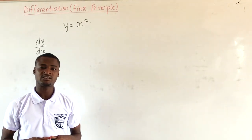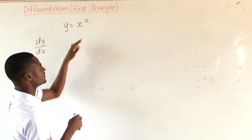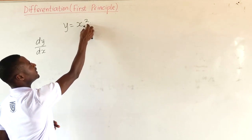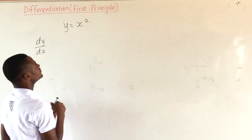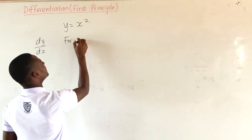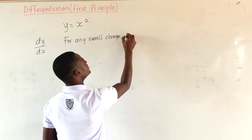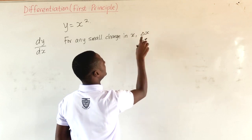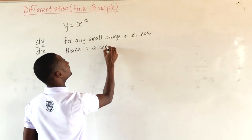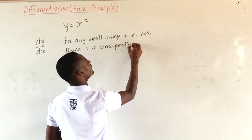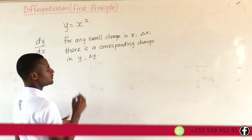Using the first principle of differentiation, the basic rule is that because this is a function of y in terms of x, when x increases by a small value, that increase will affect y, which means y will also increase by a small value. So, for any small change in x, which we will call delta x, there is a corresponding small change in y, which we will call delta y.